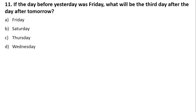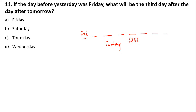Next: if day before yesterday was Friday, what will be the third day after the day after tomorrow? Day before yesterday was Friday, so today is Sunday. Tomorrow is Monday, day after tomorrow is Tuesday. Then first, second, third — that gives us Friday. So the answer is Friday.